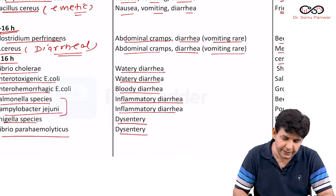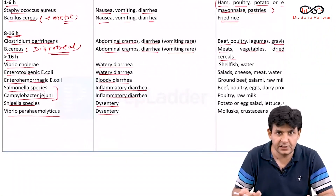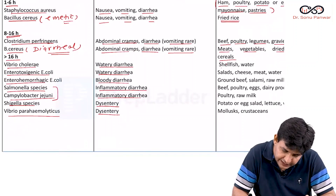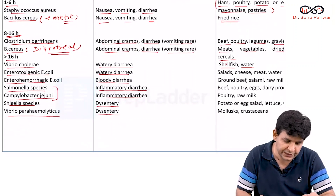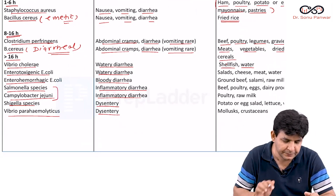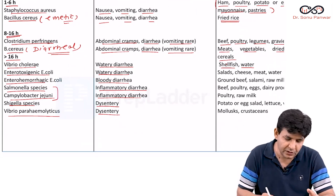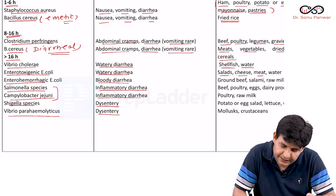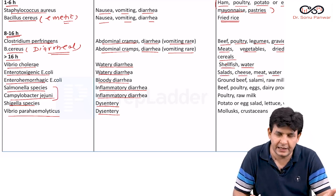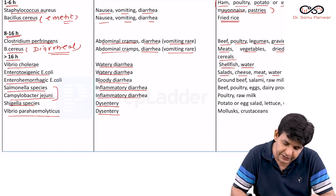Vibrio cholerae associates with eating shellfish and contaminated water. Enterotoxigenic E. coli is associated with salads, cheese, meat, and contaminated water. Enterohemorrhagic E. coli is associated with ground beef, salami, and raw milk.